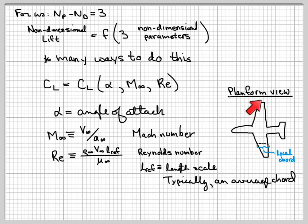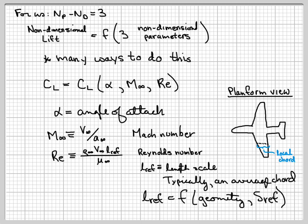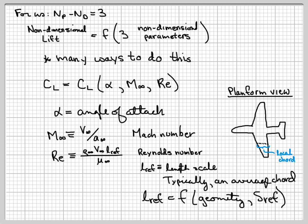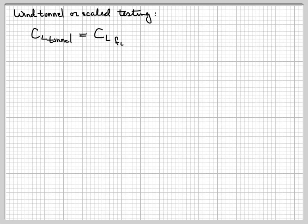I haven't actually introduced a new length scale as a parameter. If I just say I want the average chord, given the geometry and given S-ref, I can find L-ref. What does this mean about wind tunnel testing or scaled testing? It says that what I'm interested in doing is producing the same lift coefficient between the tunnel and the full scale. The way to do that is to make sure that my non-dimensional input parameters match.